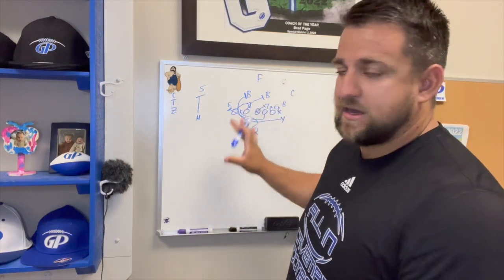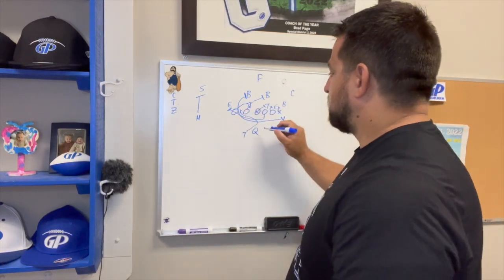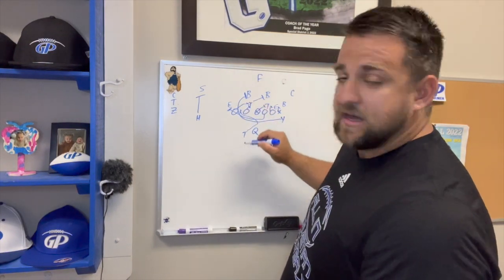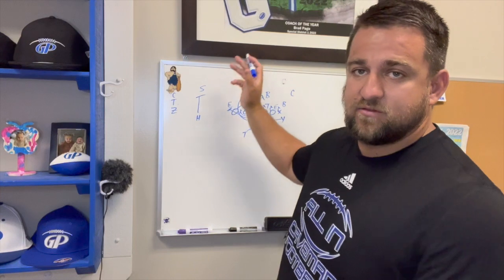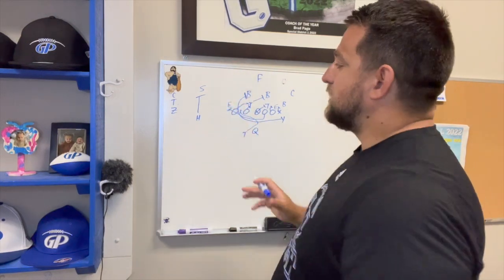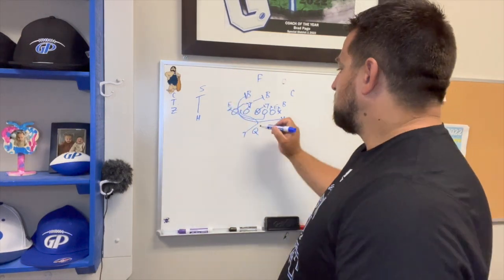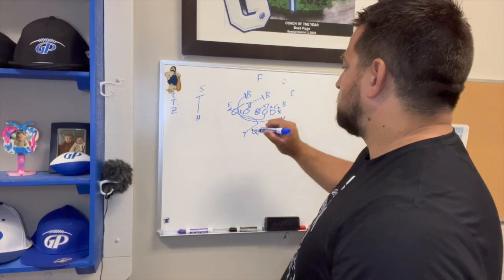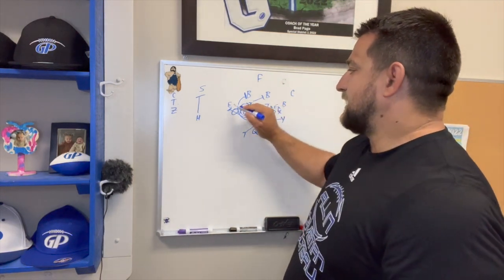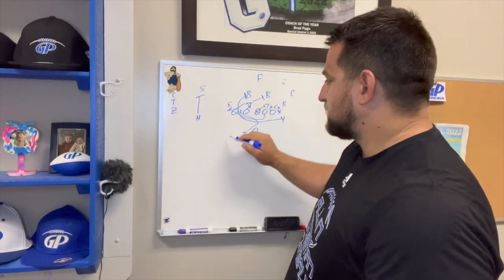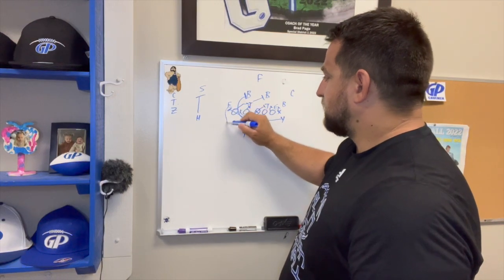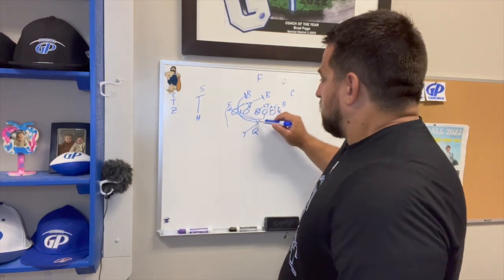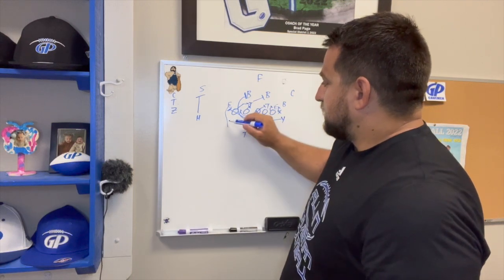A big thing we talk about with screens and counters is it's all about timing — it can look like controlled chaos, just like the play on film where it looks like the guy coming off the edge is going to blow it up and we end up taking it for 13 yards. It's all about patience and timing. Everybody has to do their job, and we've got to at least get hands on our guys. If they're over-aggressive flying upfield — say the end comes screaming up almost like a pass rush — we'll chip them just like we did on the video.